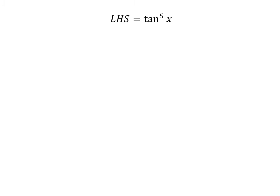Let us start from the left-hand side of the identity. LHS = tan^5(x). We can write this as LHS = tan^3(x) tan^2(x).